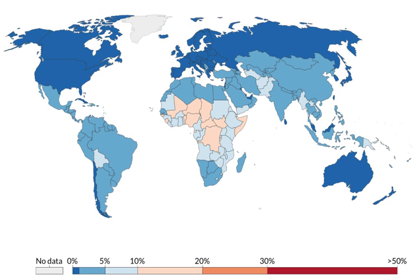Reduction of child mortality is reflected in several of the United Nations Sustainable Development Goals. Rapid progress has resulted in a significant decline in preventable child deaths since 1990, with the global under-5 mortality rate declining by over half between 1990 and 2016. While in 1990, 12.6 million children under age 5 died, in 2016 that number fell to 5.6 million children. However, despite advances, there are still 15,000 under-5 deaths per day from largely preventable causes.